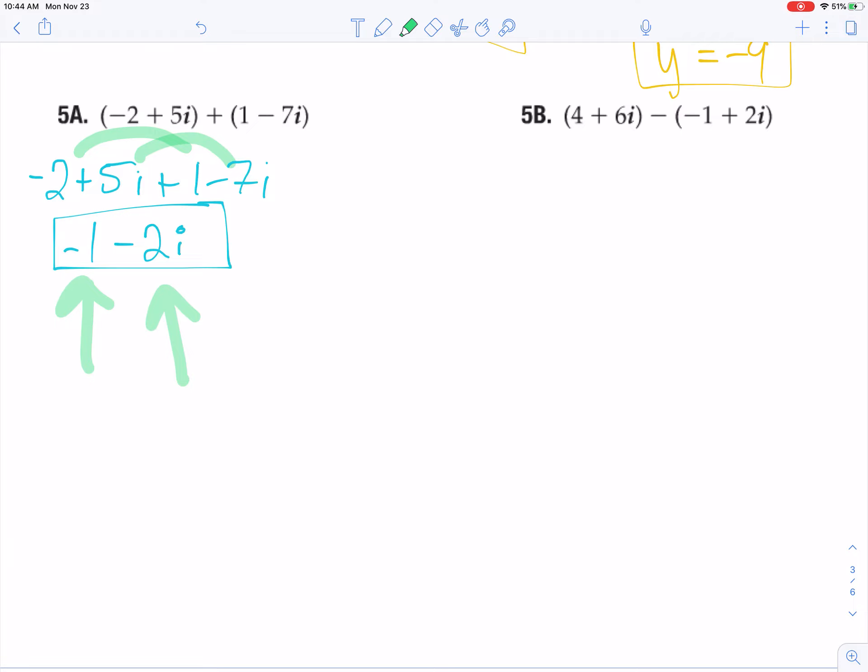So it's the regular number and then the imaginary number, the real number and then the imaginary number. When it comes to subtracting, really it's the same. The only catch is that you might distribute the negative sign to remember that you're subtracting. So it's like I'm distributing a negative 1. It's going to be a positive 1 and then a negative 2i. So what I have now is 4 plus 6i plus 1 minus 2i. Combine like terms like so.